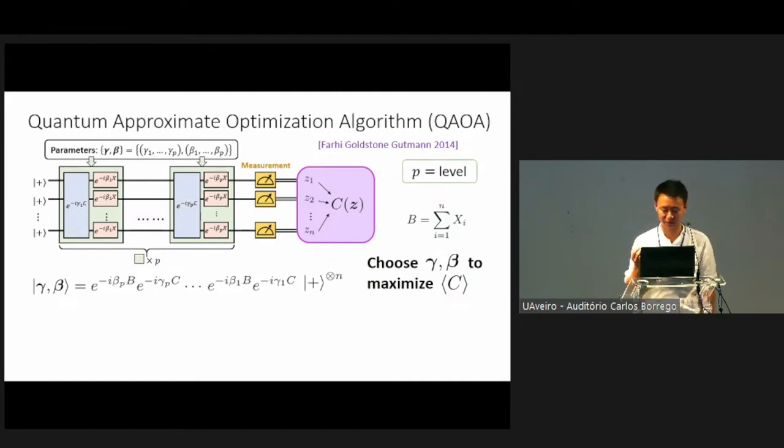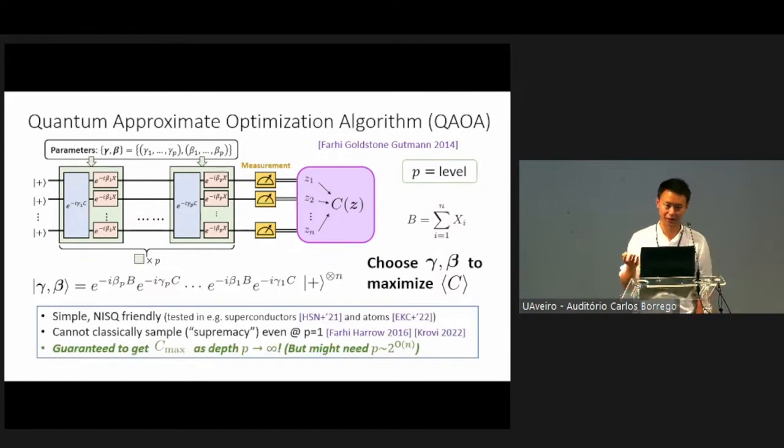But you do this unitary with parameters gamma and beta. The idea is that if you choose this gamma and beta cleverly, you can potentially maximize the costs that you get when you look at the measurement. This algorithm is parametrized by integer p, which is what sometimes we'll call the level of the algorithm, and it's basically the number of layers of this alternating unitary that you apply.